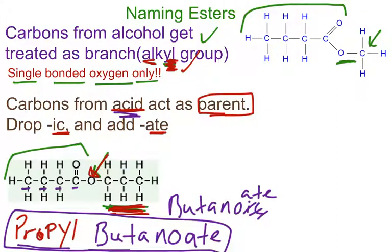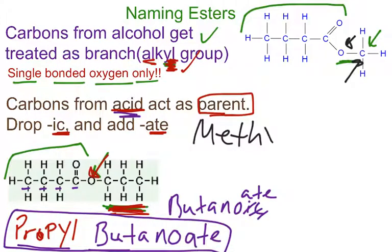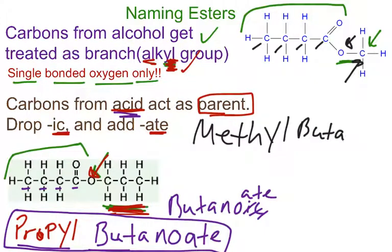Now for this other molecule: I have carbons attached to a single-bonded oxygen, so I treat it as my alkyl group. I have one carbon, so that's M-E-T-H — 'meth' means one — with a -YL ending, treating it as an alkyl group. And once again I have one, two, three, four carbons on the rest of the molecule. So that'll be methyl butanoate — and I'm done.